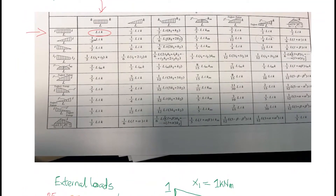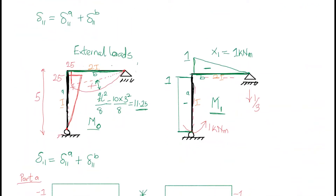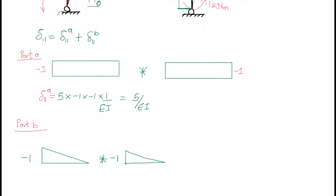So this triangle times itself — let's go to the table and look for the formula. I'm picking the formula (1/3) × L × i × k rather than (1/6) × L × i × k, because the maximum values of these two triangles are on the same side. That is why I picked one-third L times i times k.